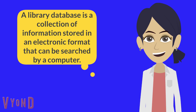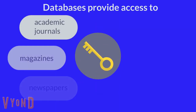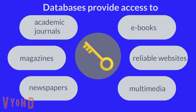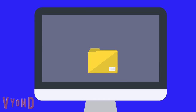A library database is a collection of information stored in an electronic format that can be searched by a computer. Databases provide access to academic journals, magazines, newspapers, e-books, reliable websites, and multimedia materials. The information found in databases is either originally created or comes from other reliable sources.